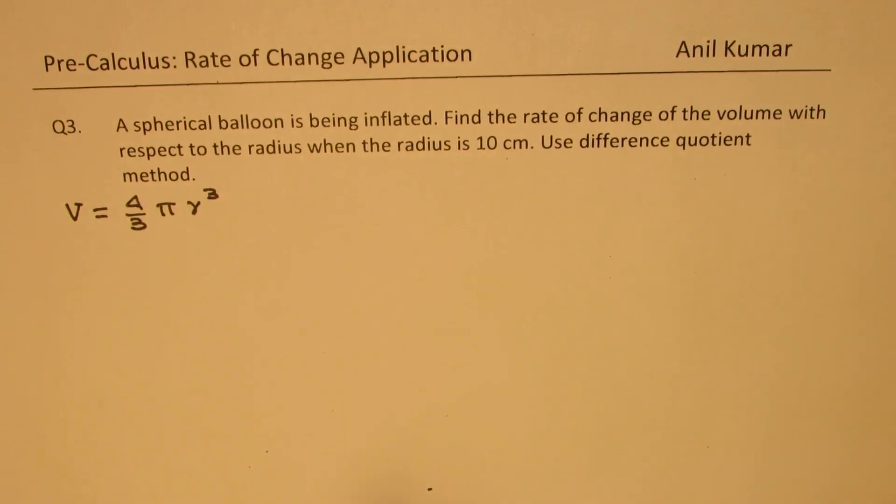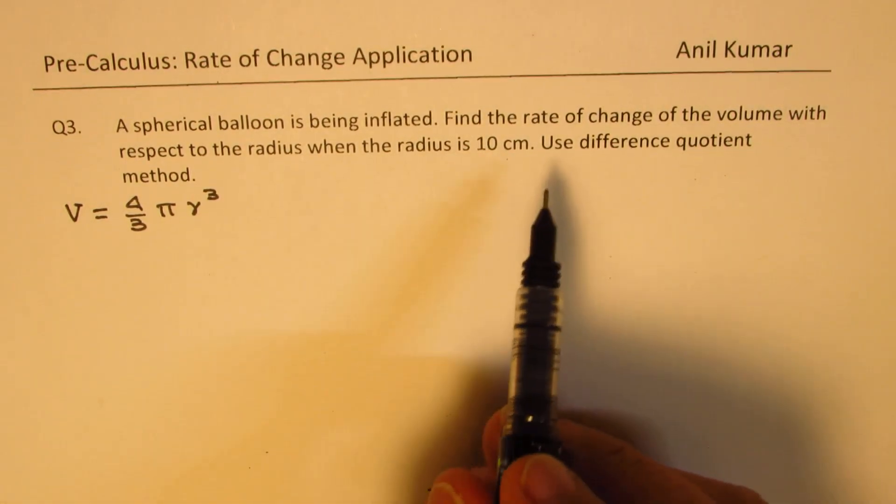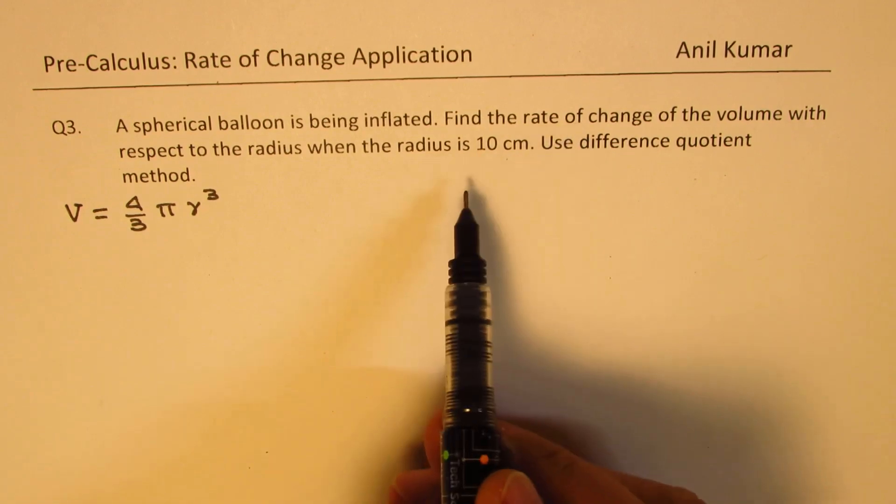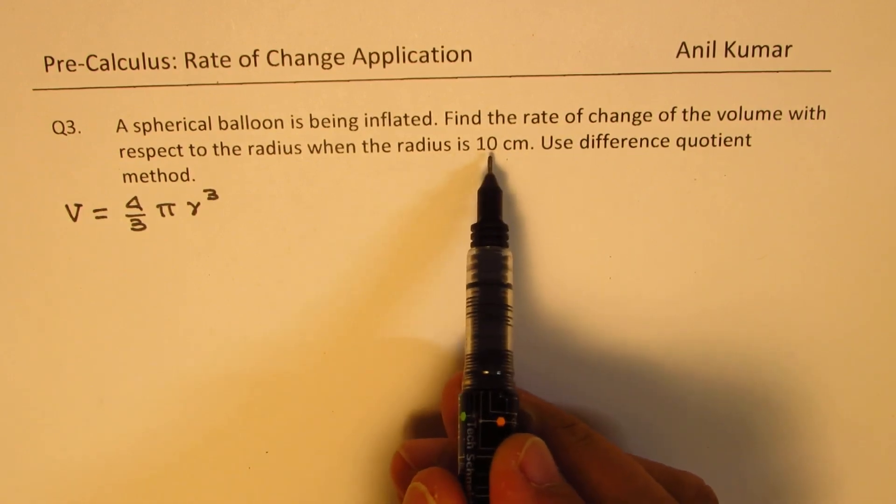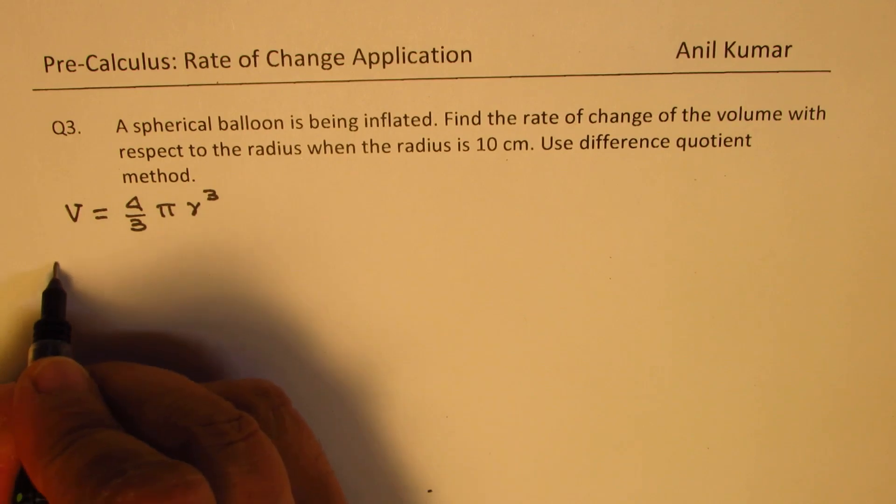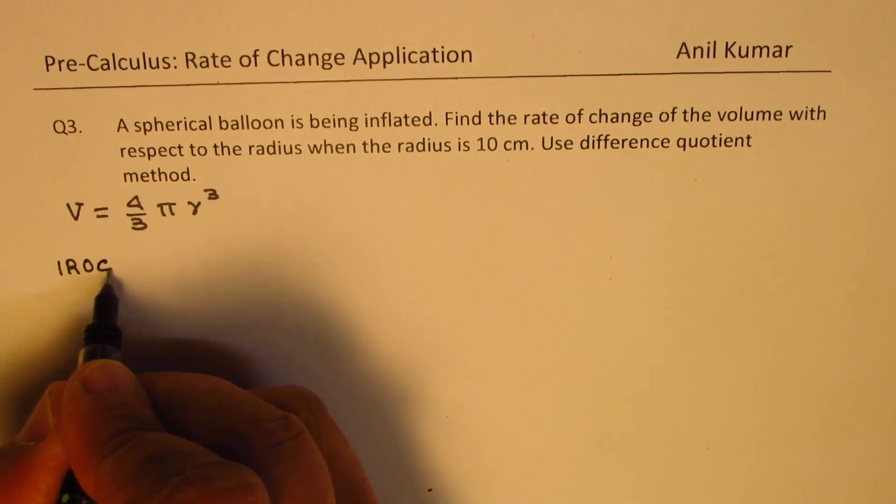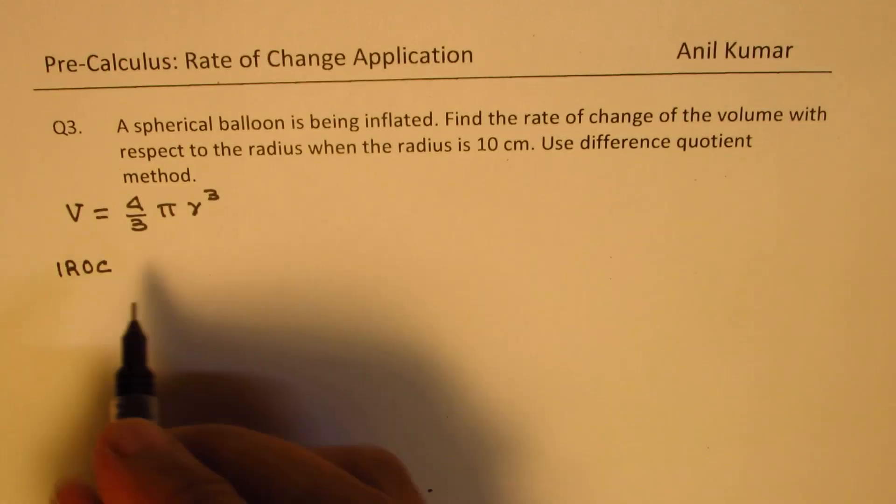Now we can use this formula. We know radius is 10. We need to find instantaneous rate of change when radius is 10 using the difference quotient method.